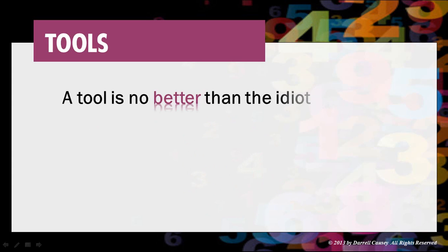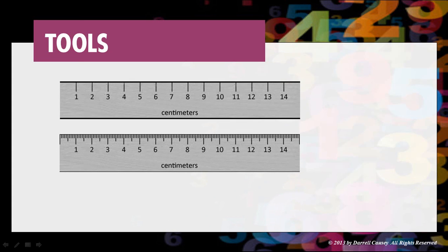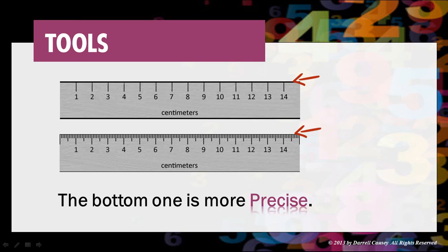Tools? A tool is no better than the idiot using it. So let's look at two tools here. Here we have the one at the top and one at the bottom. They're both accurate. The bottom one, however, is more precise. You can get a better, more precise, and more accurate reading than you can from the top or you're going to have to do some guessing.